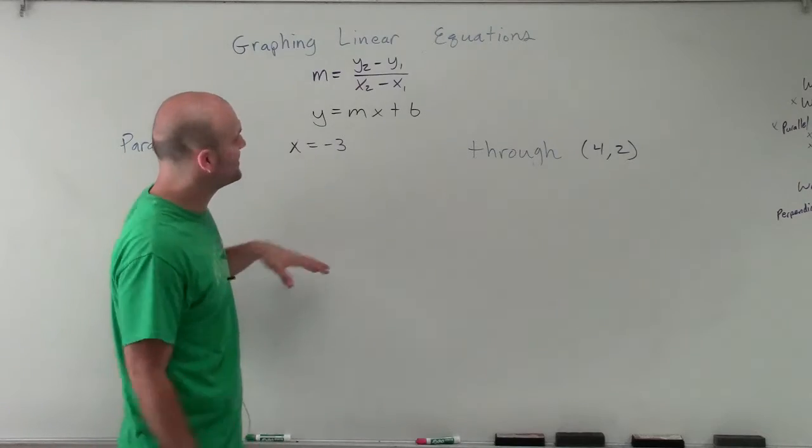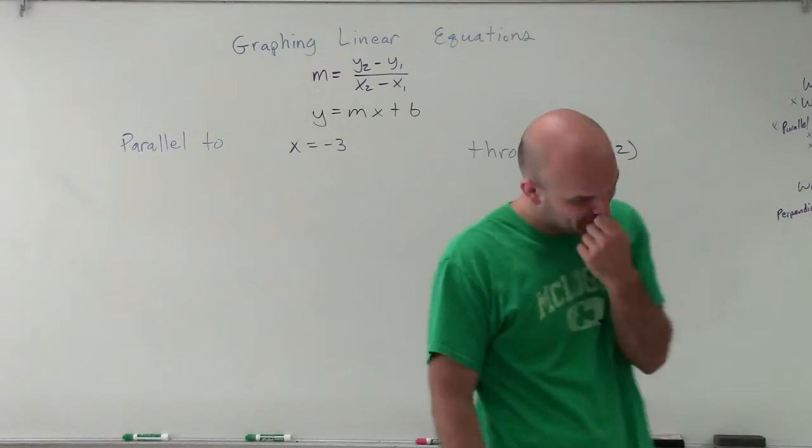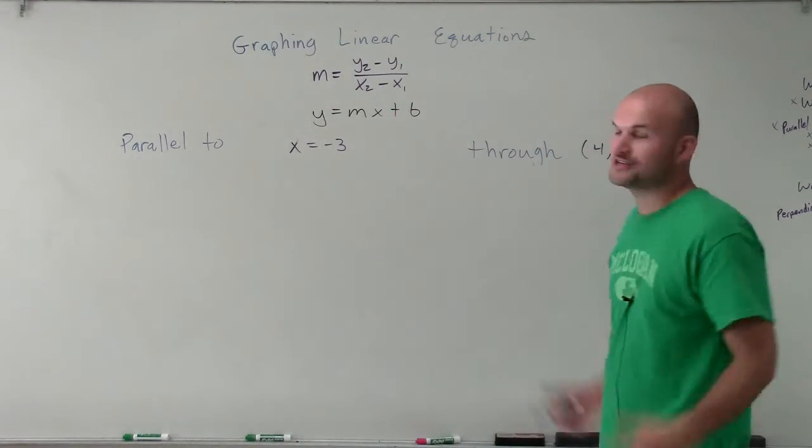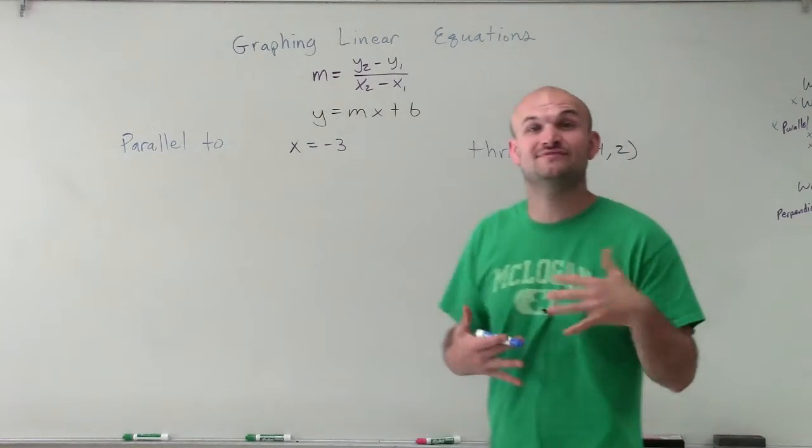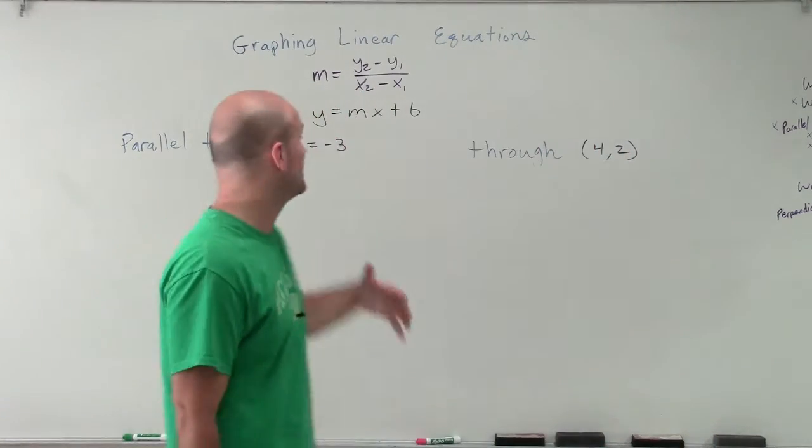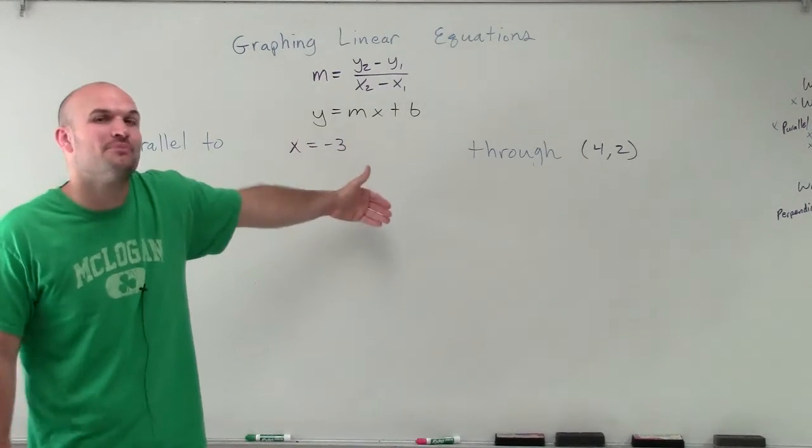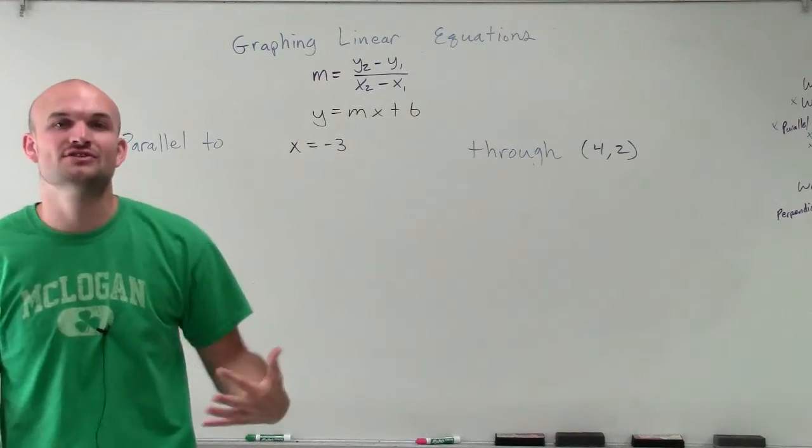Welcome. So here comes a good problem here. The reason why I like this one is because we can't apply the same method that we've done before to use slope-intercept form, because this equation is not in slope-intercept form. So we have to go by an understanding of what parallel lines are to be able to find a line that's going to be parallel to x equals negative 3.